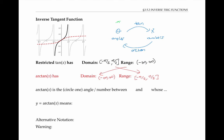and therefore arc tan of one is pi over four. So arc tan of x means the angle between negative pi over two and pi over two whose tangent is x.